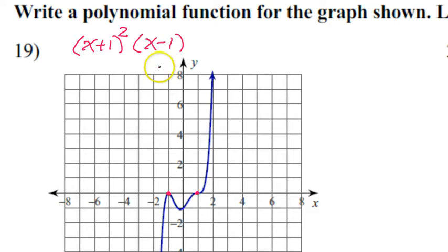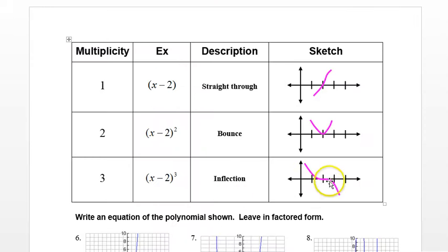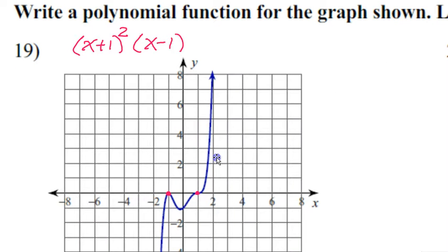Alright, now this x minus one came from a zero of positive one. This is an inflection. See how it sort of flattens out and then keeps going? This is an inflection. So we learned that at an inflection, that happens when you have a multiplicity two on the factor. I'm sorry, multiplicity three on the factor. So this is going to have to be cubed.